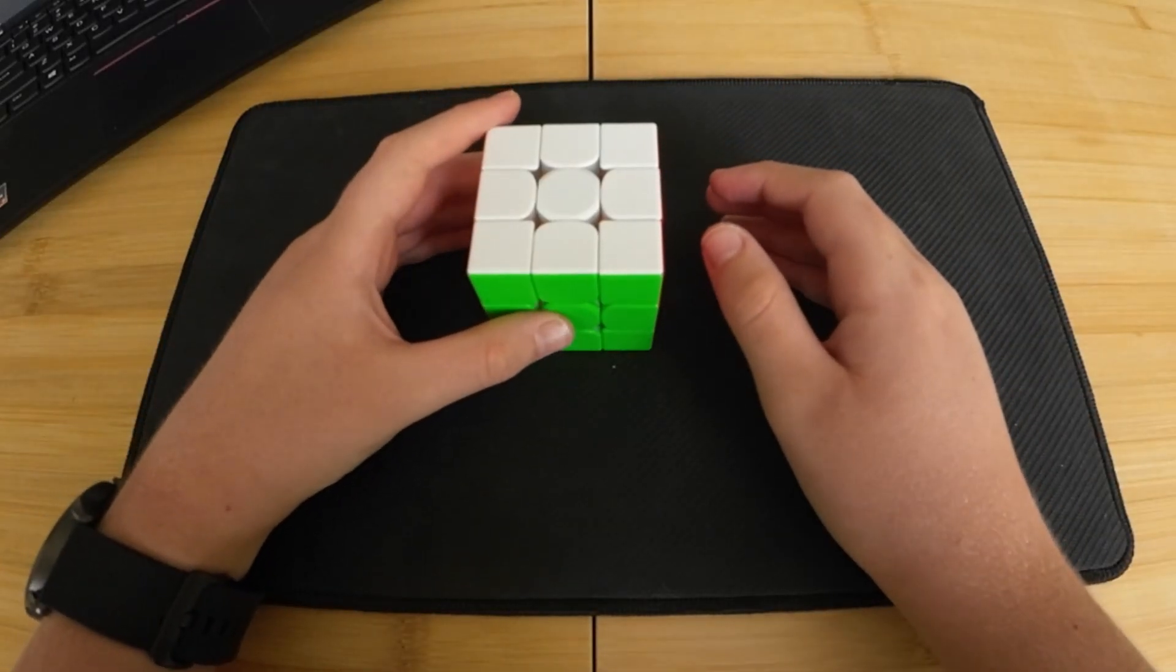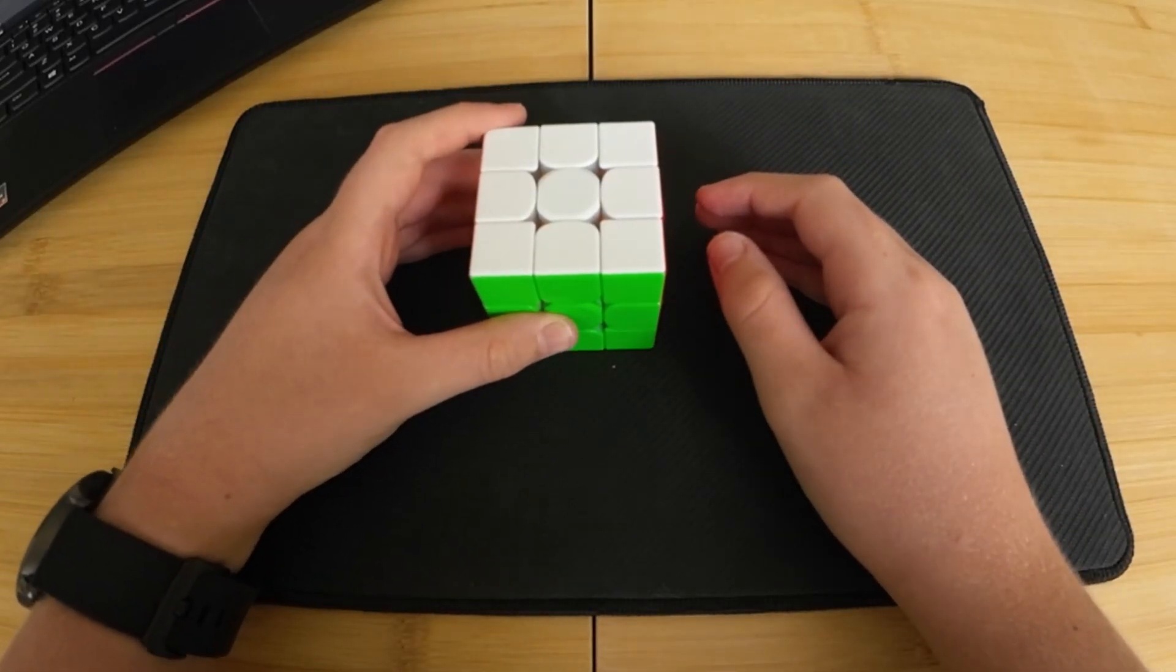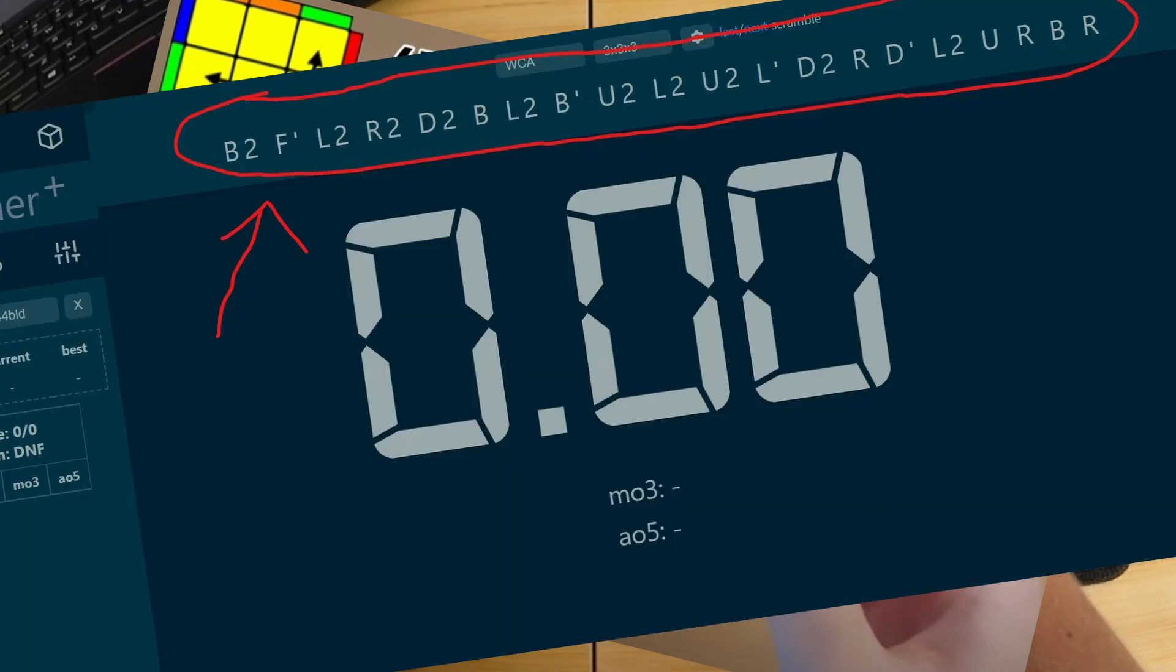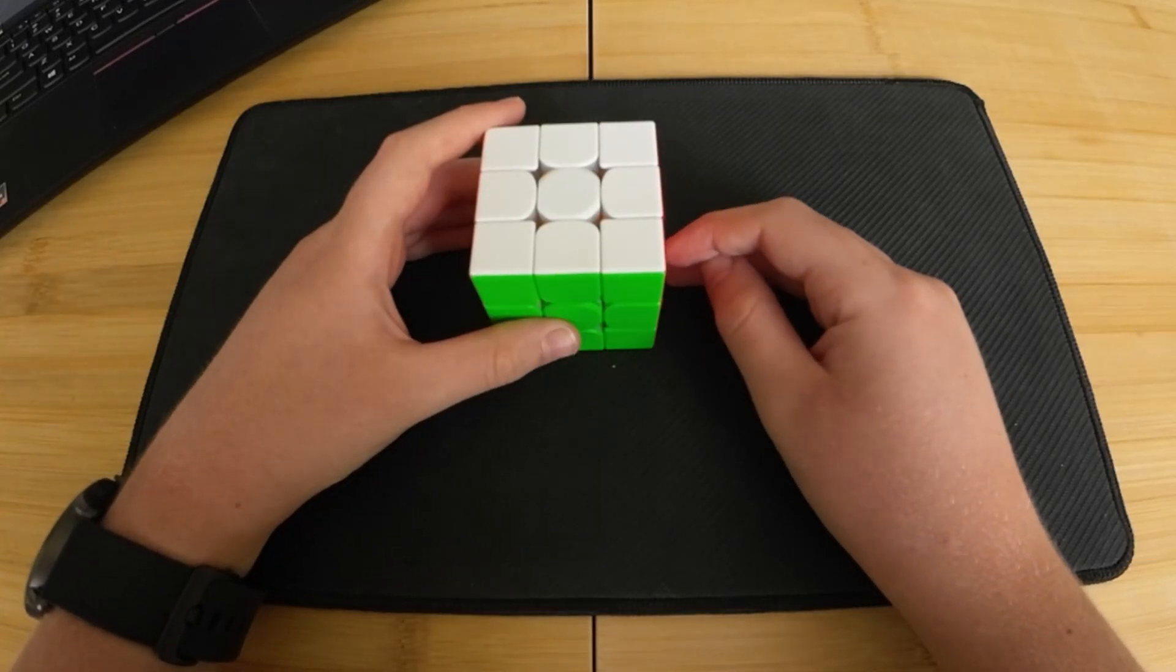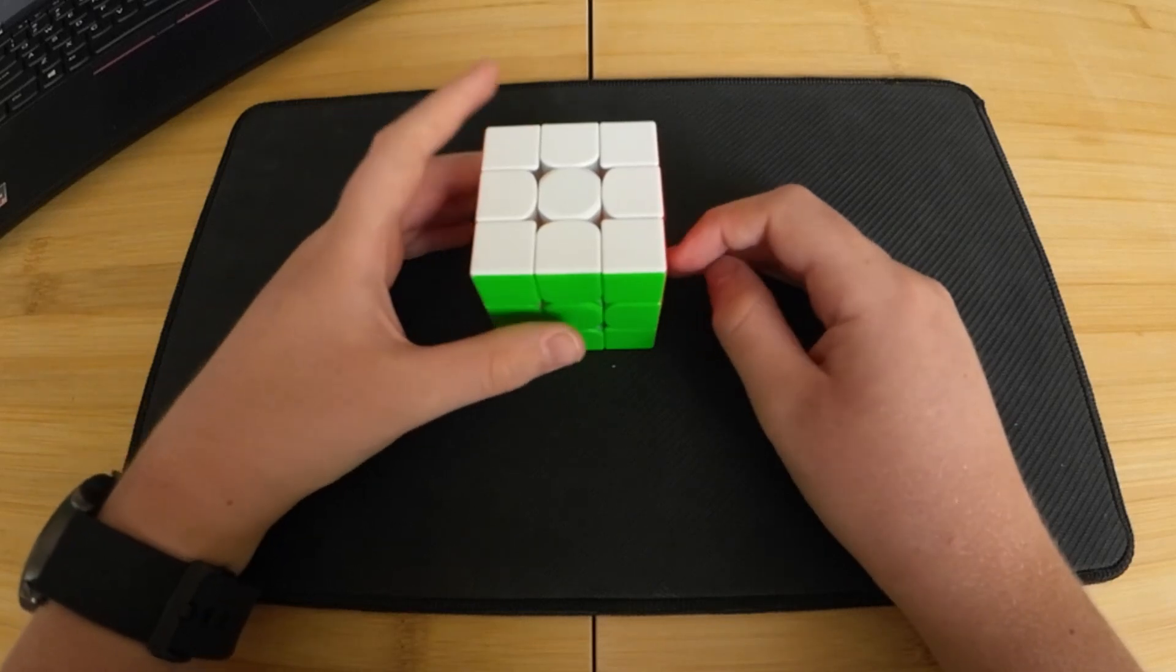As a newer cuber, you might have come across those weird letters in cubing videos or on cube timers. This is called cube notation. These are actually used so that you know what turns to do on the cube.